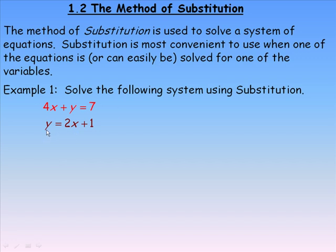Notice that the second equation is already solved for y — y is alone. The first equation could also easily be solved for y because the coefficient of y is 1, so it would be easy to get y alone. Since y is equal to 2x plus 1 in the second equation, we can substitute that into the first equation in place of y.